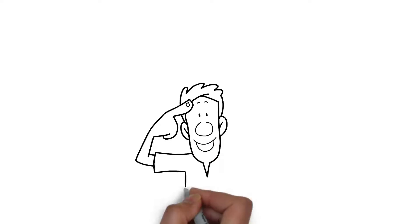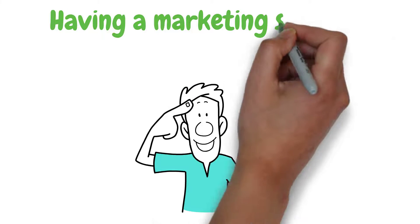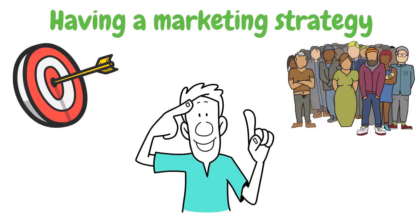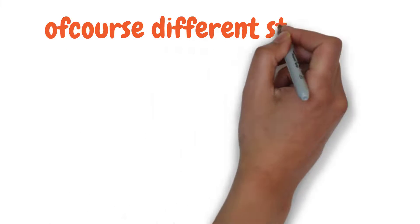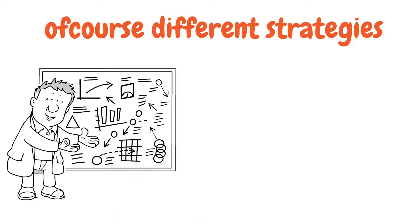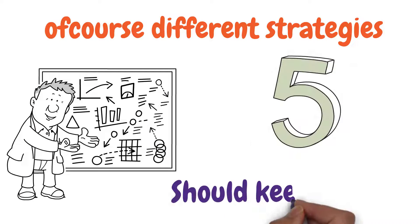First, we need to understand the importance of having a marketing strategy. Its main aim is to help you reach a wider audience and maintain a long-term relationship with your customers. There are, of course, different strategies that you can take on. But regardless of the plan you choose, there are five main essentials you should keep in mind to create a successful marketing strategy.